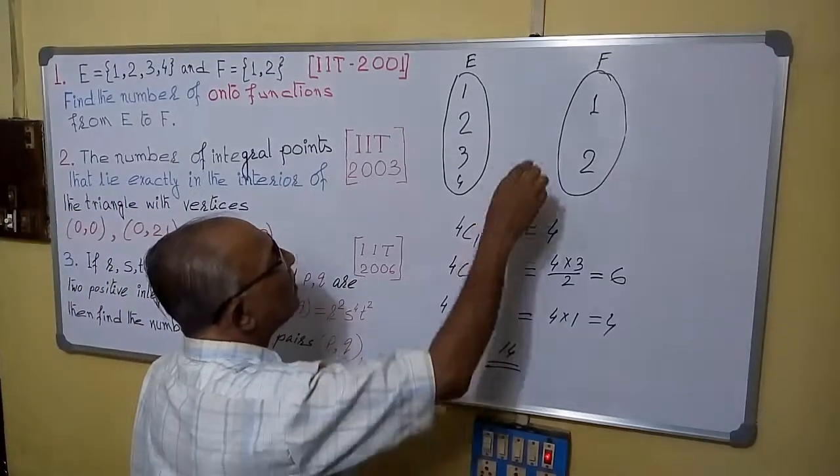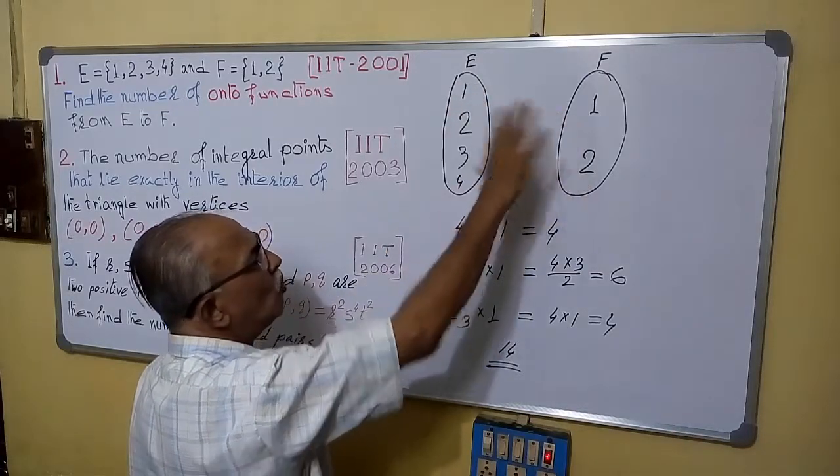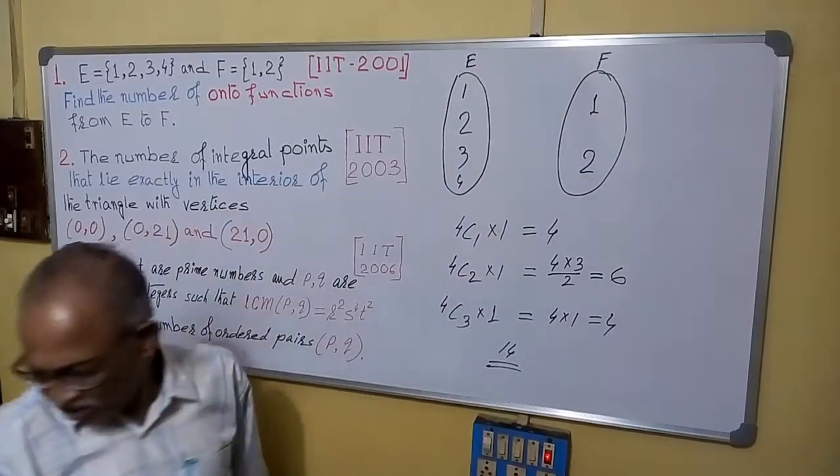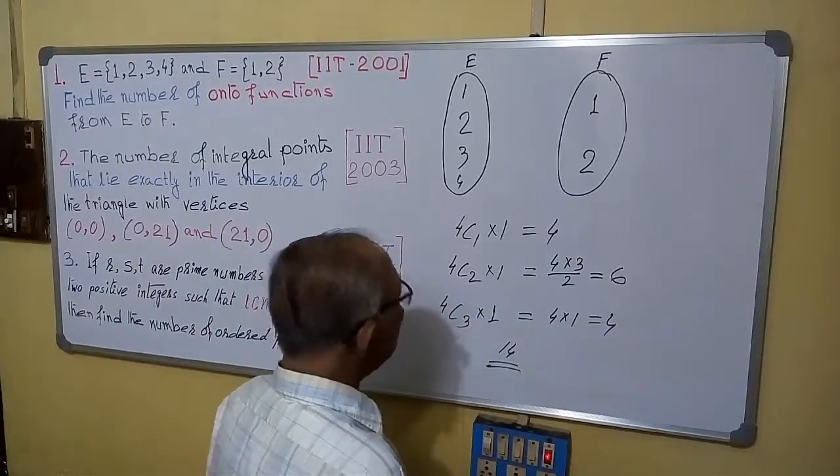You have to remember that from any point two arrows cannot go. Second thing, at every point an arrow should reach. In this way, we can solve this sum in a small time.